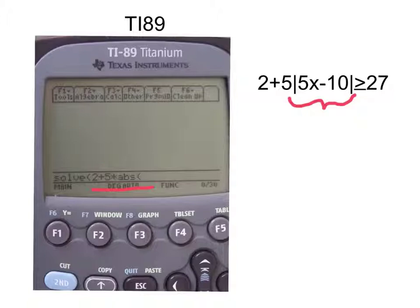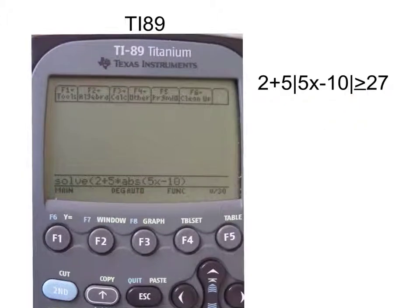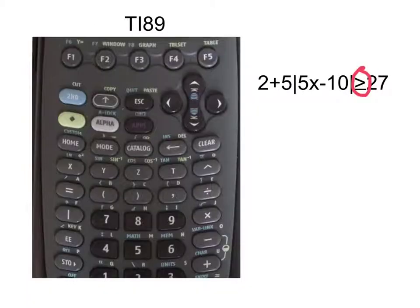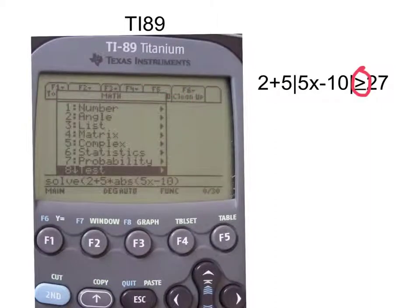Now we want to enter in the rest of the absolute value part. So enter 5X minus 10, close the parenthesis. Now we want to enter the greater than or equals. To do that, go to second, math, hit the number five. This drop box drops down and we want to go down to number eight, test. You can hit the eight on the calculator, or scroll down to highlight test and hit enter. I am going to scroll down to number eight, test, and hit enter.